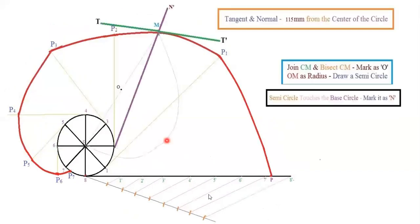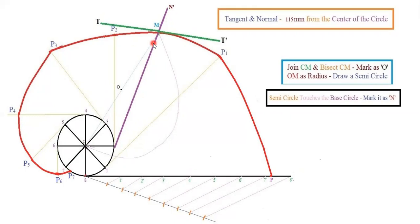Next, draw the tangent and normal. The problem states 115 mm from the center of the circle. Take 115 mm, keep your compass at center C, and cut an arc on the curve — cut it from the opening side of the curve on the right-hand side. Name that point M. Now join C and M with a very light line using a 2H pencil. Bisect the line CM to find the midpoint and name it O.